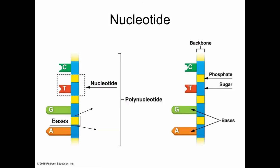This is what a nucleotide looks like — the repeating unit of the DNA molecule. A nucleotide is made up of a phosphate group represented by the yellow square, a sugar represented by the blue square, and a nitrogenous base — represented by one of four letters, in this case T for thymine. DNA strands are these nucleotides all linked together. Using our spiral staircase analogy, the rails on either side are the backbone, made up of phosphates and sugars bound together.